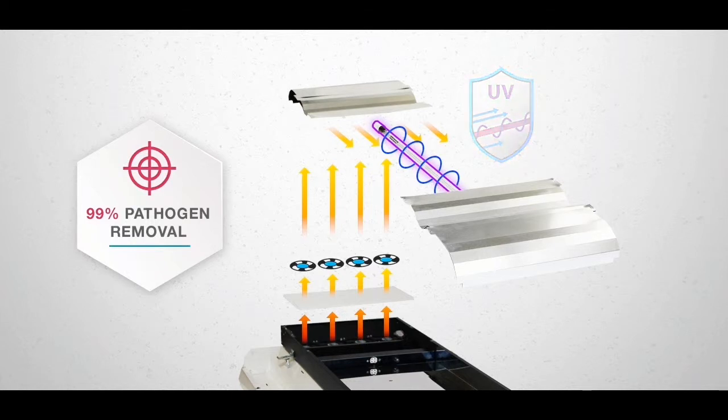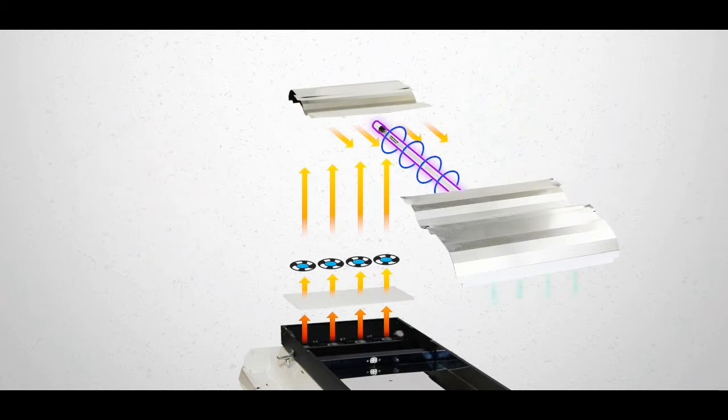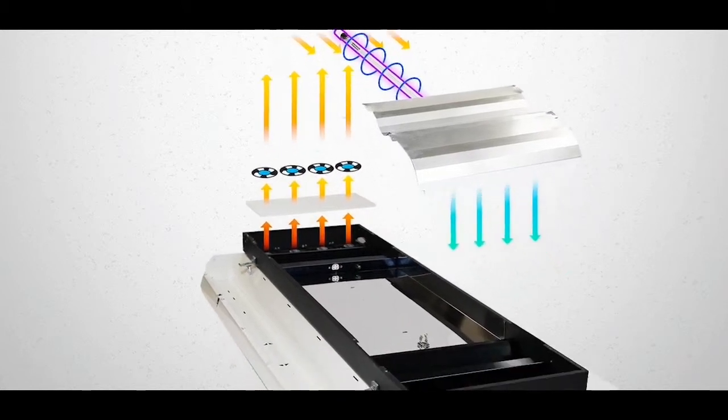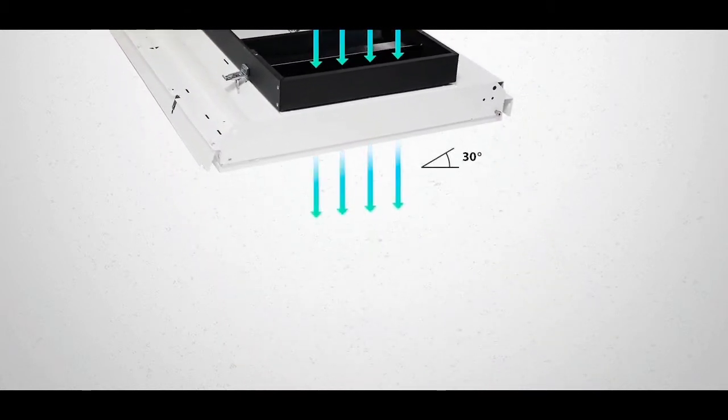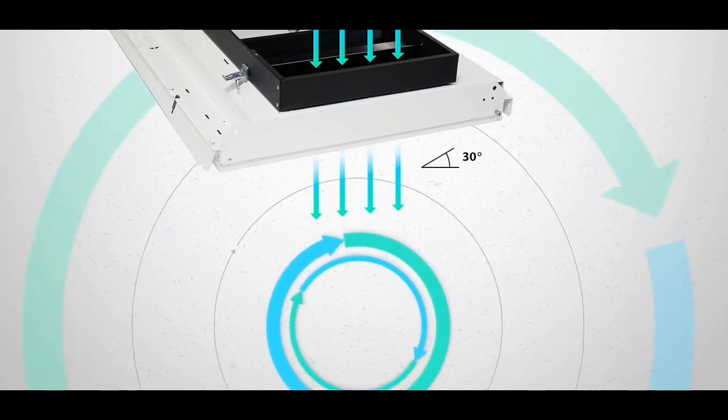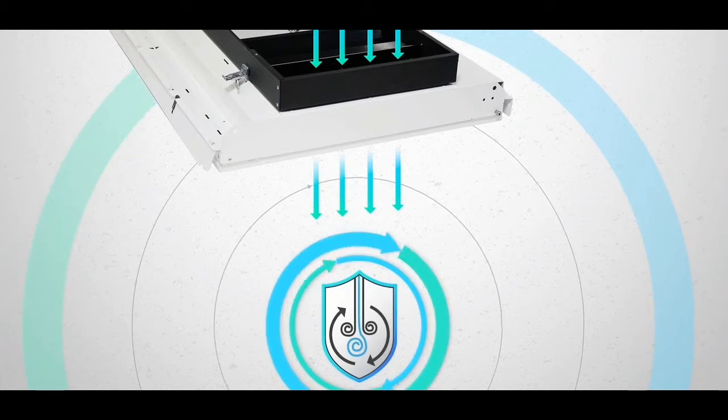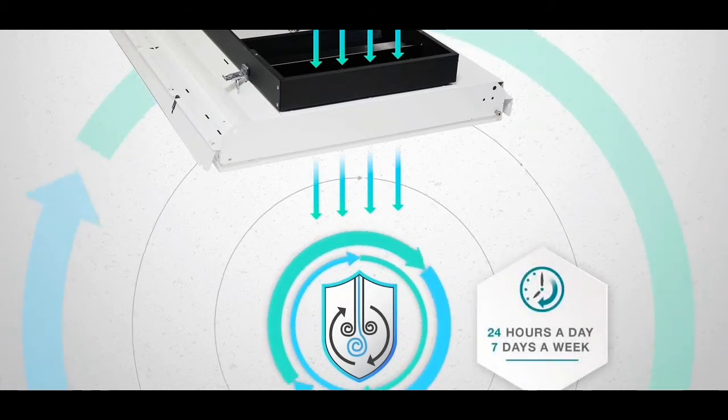The purified air is then returned to the space through an additional set of safety baffles and out the opposing grill which has a 30 degree angle on the blades to force air throughout the room. The CDC recommends dilution as the fourth line of defense and our device operates 24 hours per day constantly changing and purifying the air. In a 10 by 10 room we will change the air an average of four times per hour.